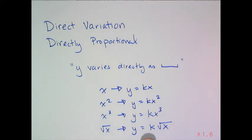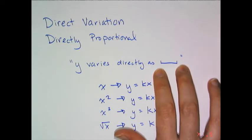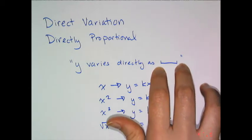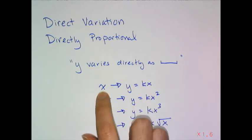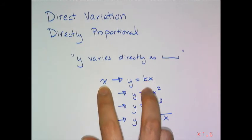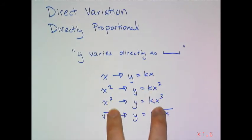What you see in general is y varies directly as something. It's going to be a variable in general x, and it can be anything. It could be y varies directly as x means you get y equals kx, but you can also vary directly as the square of that variable, which gives you y equals kx squared, or the cube, which gives y equals kx cubed, or the square root of that variable, which is y equals k times the square root of x.